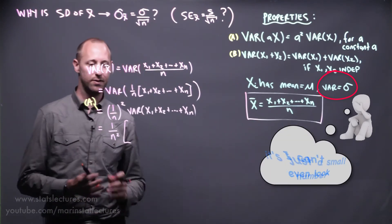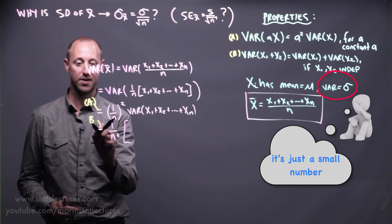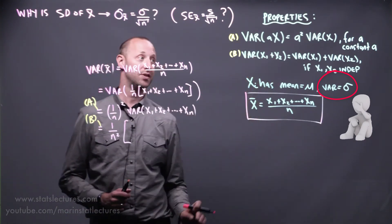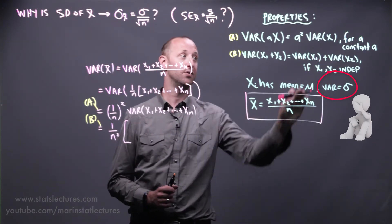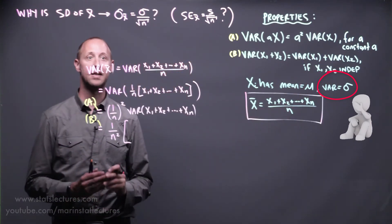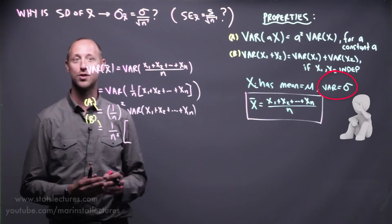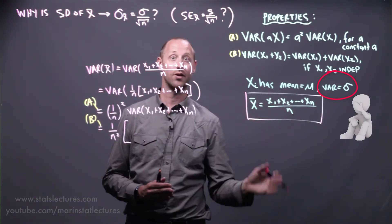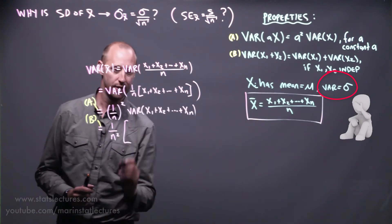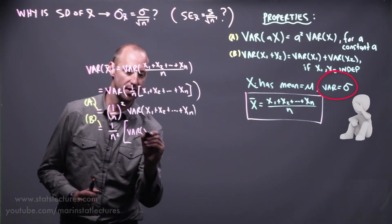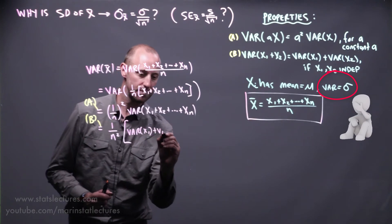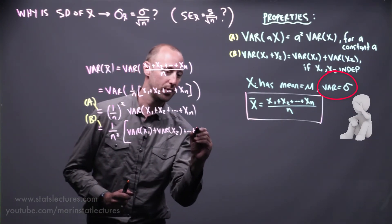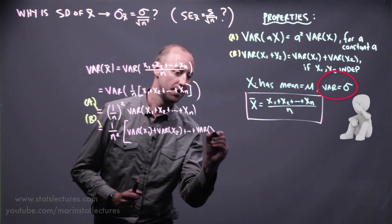And then this here, again using what I've labeled as property B up there, the variance of x1 plus x2 can be written as the variance of x1 plus the variance of x2 if they're independent. In taking this random sample, we assume it's an independent random sample. All the observations we've randomly selected are independent of one another. So we can write this as the variance of x1 plus the variance of x2 all the way up to the variance of xn.